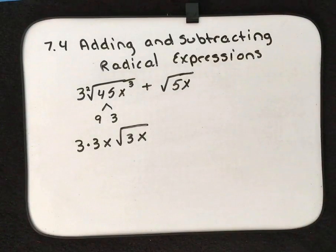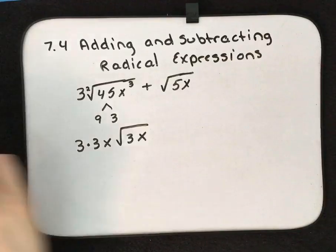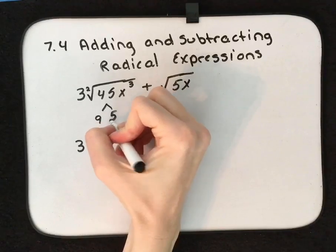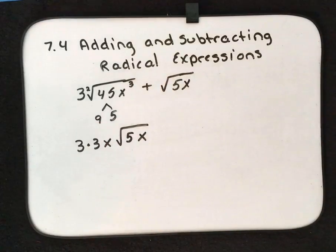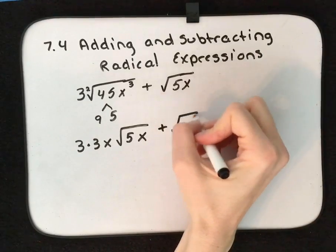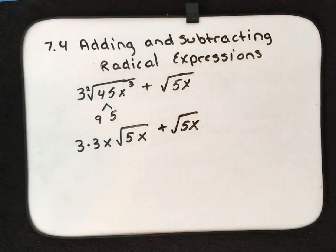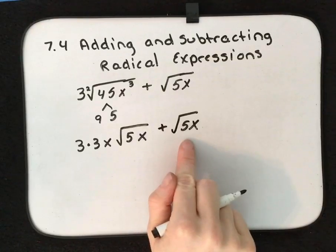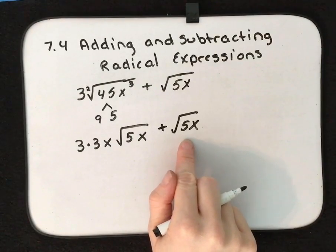Then we have—let's fix that—9 × 5 is 45. There we go. That'll work out a whole lot better. Plus our √(5x) from right here. Now we have some common pieces. We have √(5x) here, we have √(5x) here. They're both under the square root. So let's see if there's anything that we can do.